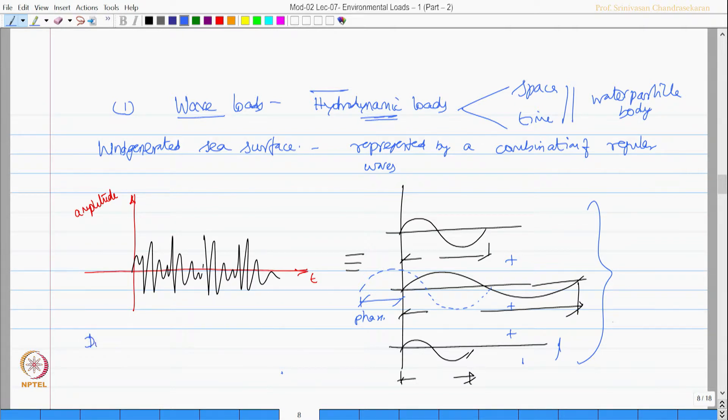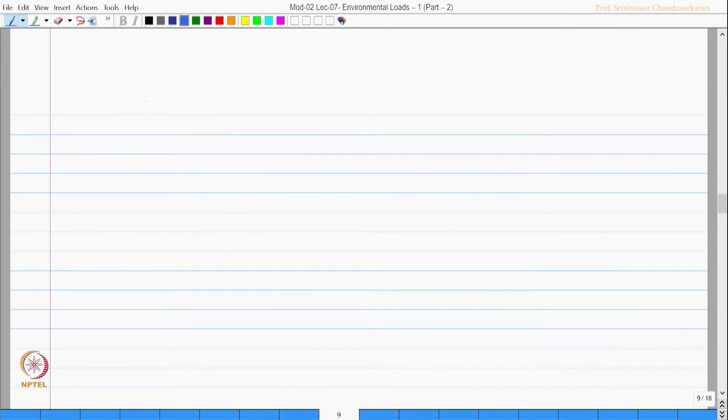So sea surface elevation generated by wind can be represented by combination of these kinds of regular waves. Regular waves of different amplitudes, different wavelengths, different directions and phase lag are combined to form the input load. How are they expressed? In theory, they are expressed using water particle movements. Water particle velocity and acceleration in both horizontal and vertical directions or propagation.